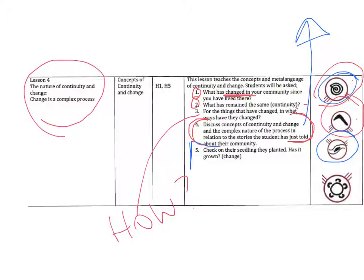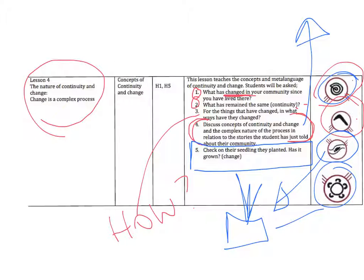The next thing we want to do is check on the seedling in the plant pot. And we want to ask students whether it's grown. How has it changed since they planted it? So we're actually going to create some land links and symbols and images and refer back to this pot plant as a representative of the concepts of continuity and change.